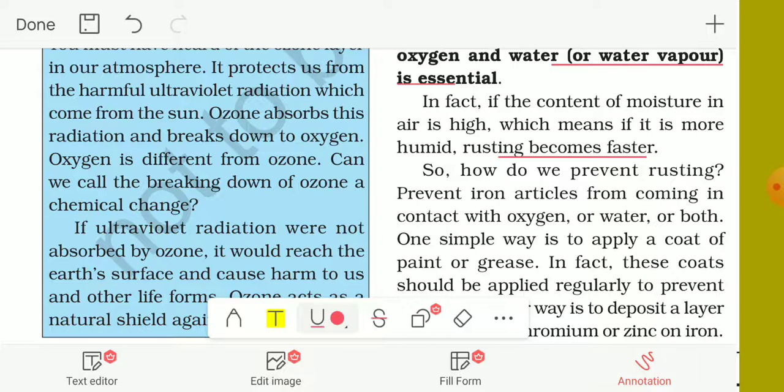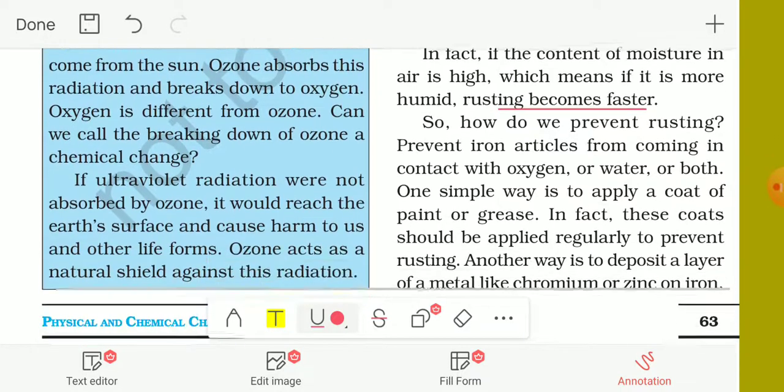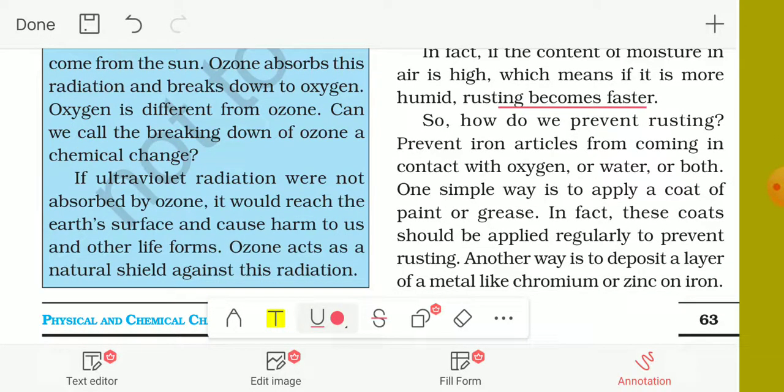So, how do we prevent rusting? Rusting is prevented by preventing articles from coming in contact with oxygen or water or both.